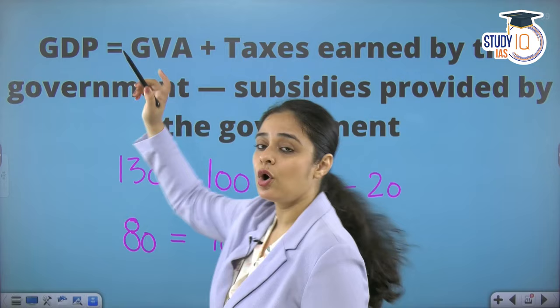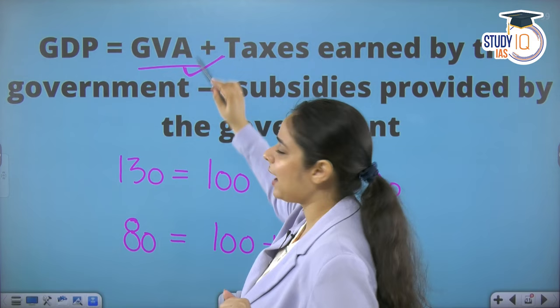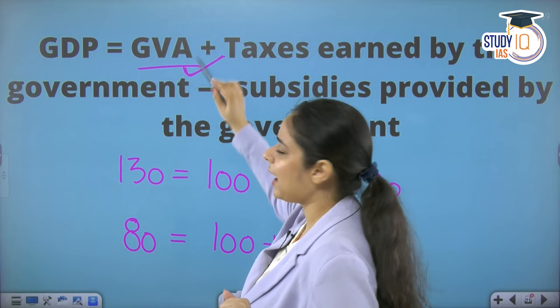GDP and GVA are connected. GDP can be derived from GVA. There are three ways to calculate GDP, and one of them uses GVA. The formula is: GDP = Gross Value Added plus taxes earned by the government, minus subsidies given by the government throughout the year.